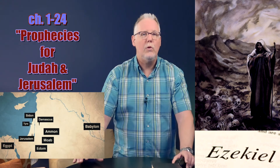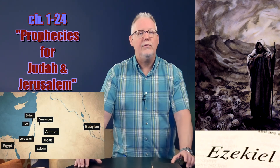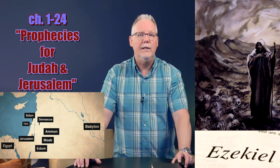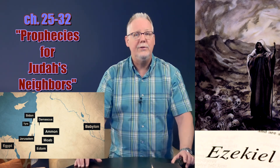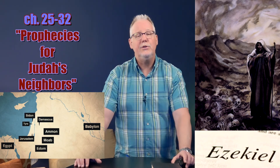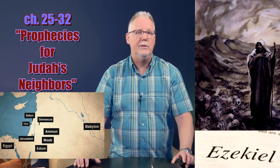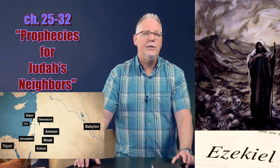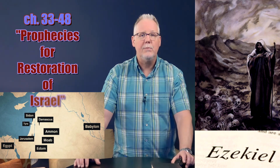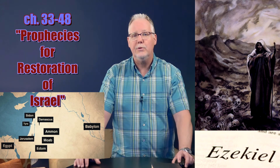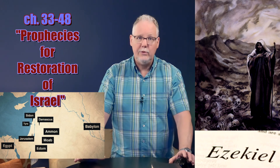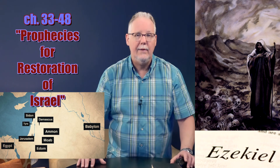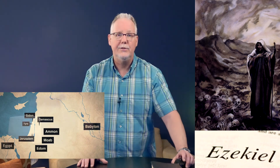Ezekiel can be divided into three discernible sections. In chapters 1 through 24, there are prophetic messages concerning Judah and Jerusalem. In chapters 25 through 32, there are prophetic messages concerning the nations that surround Israel. And in chapters 33 through 48, there are prophetic messages concerning Israel's restoration. But remember, it's quite symbolic, so you have to take the symbolism for what it is — it's symbolic, but the message is literal.